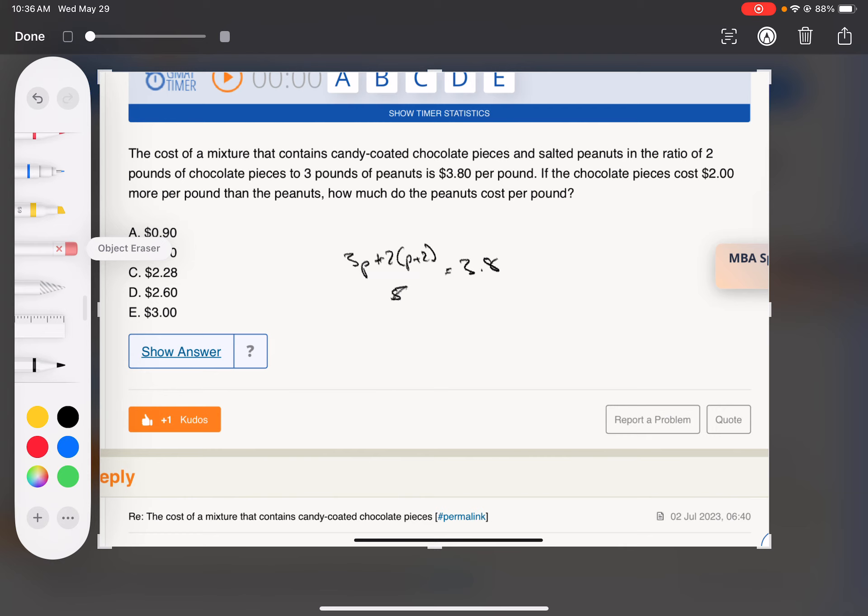So I multiply by 5. Notice 3.8 times 5 - I'm going to turn 3.8 into 3 and 4/5 and make an improper fraction. 5 times 3 is 15, plus 4 is 19.